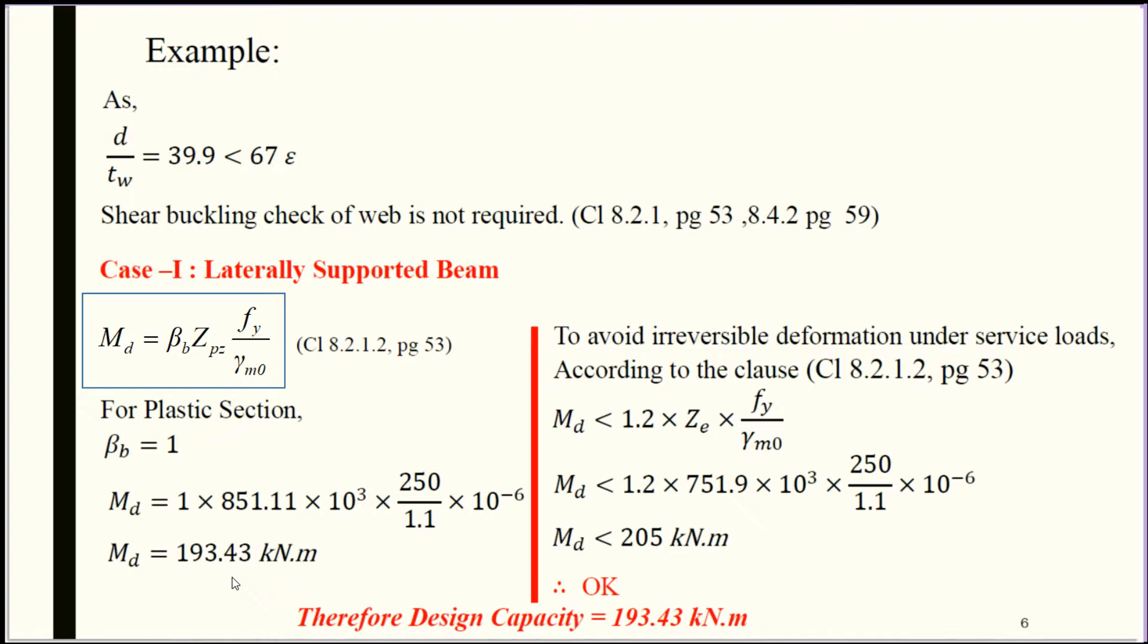When calculating design capacity for the laterally supported beam, we need to check that MD must be less than 1.2 × ZE × FY / gamma M0. MD = 1.2 × 751.9 × 10³ × 250 / 1.1 × 10⁻⁶ = 205 kilonewton meter. The value is less than 193.43, so it is okay.